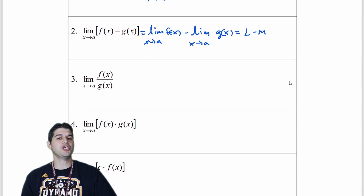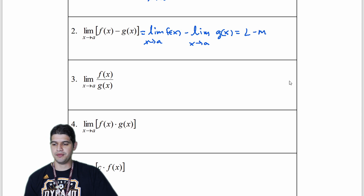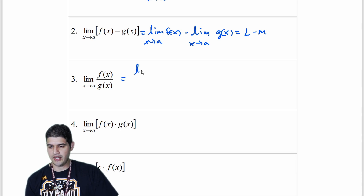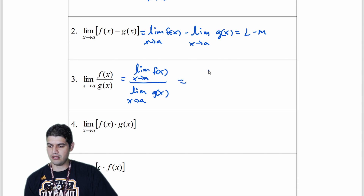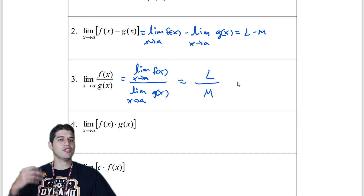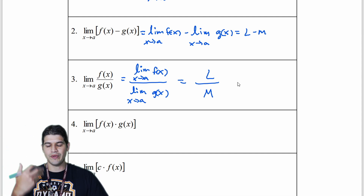With division, we can also distribute. So we'll have the limit as x approaches a of f of x over the limit as x approaches a of g of x. In the numerator I have L and in the denominator M, so whatever those two values are, we can divide them.